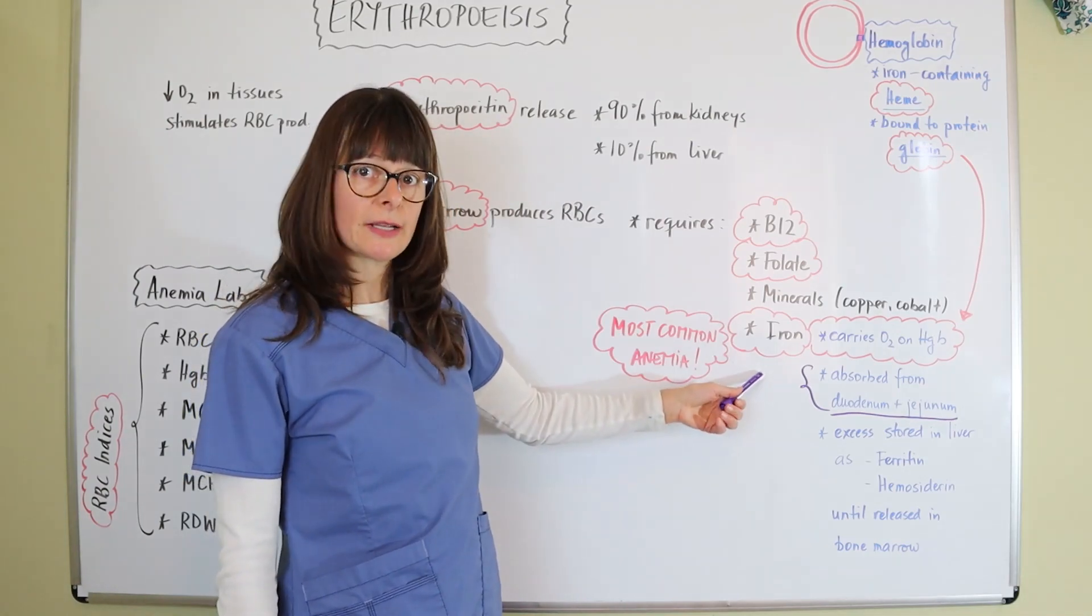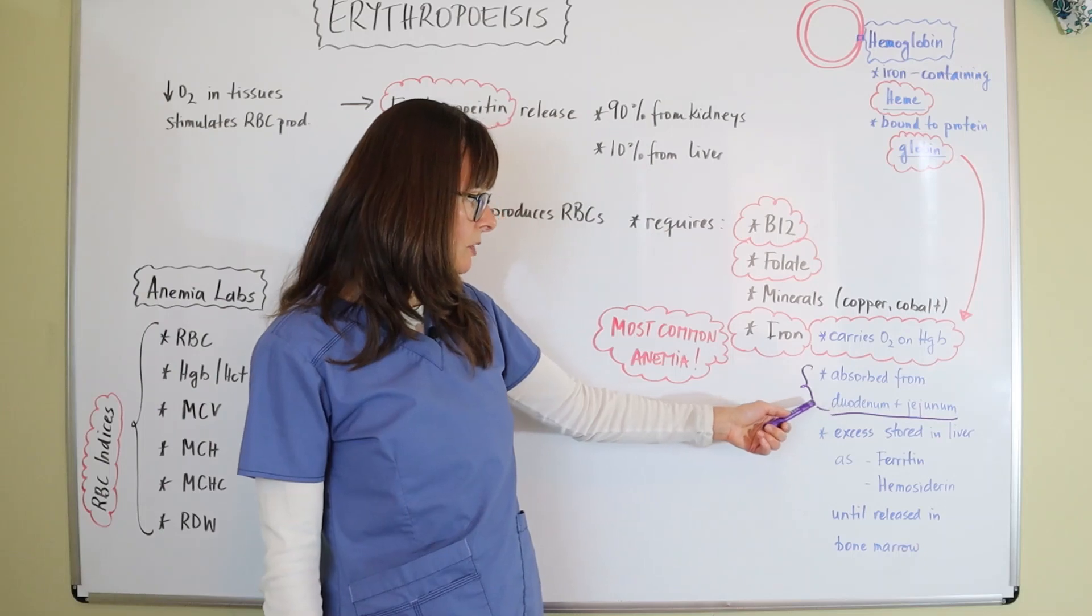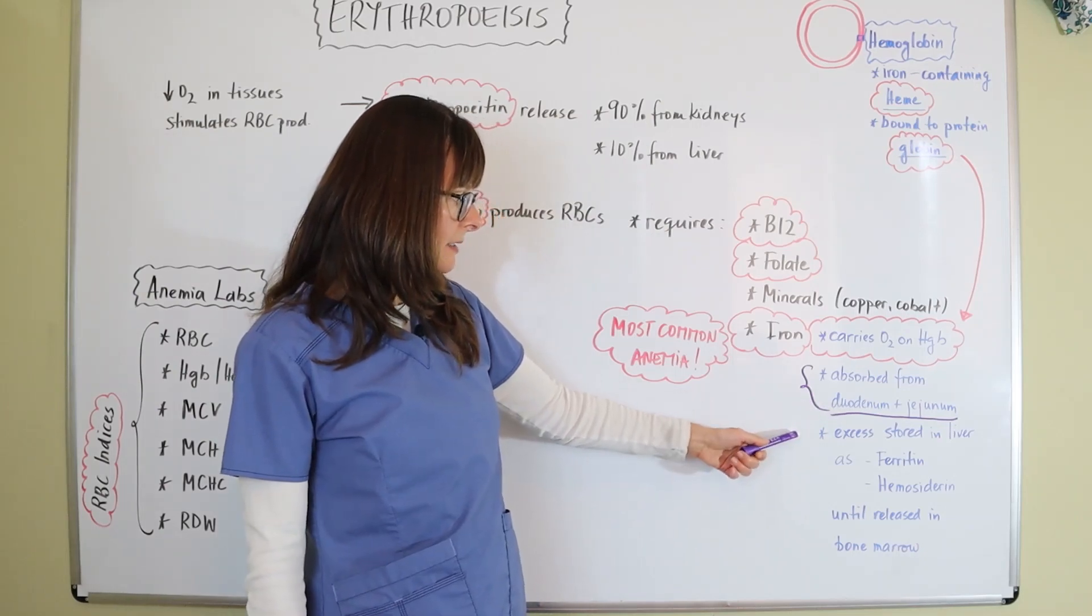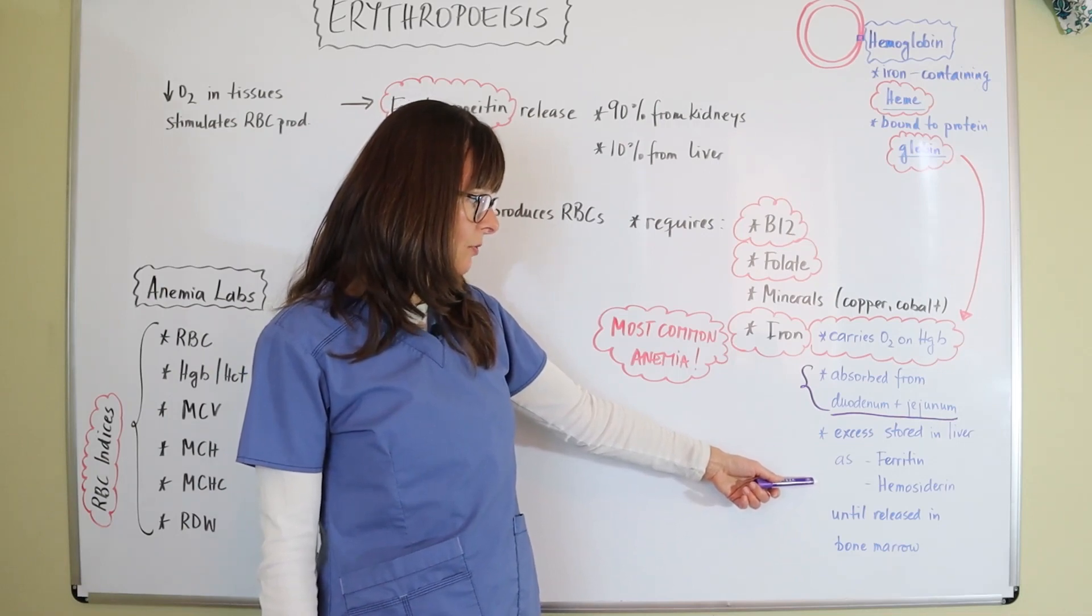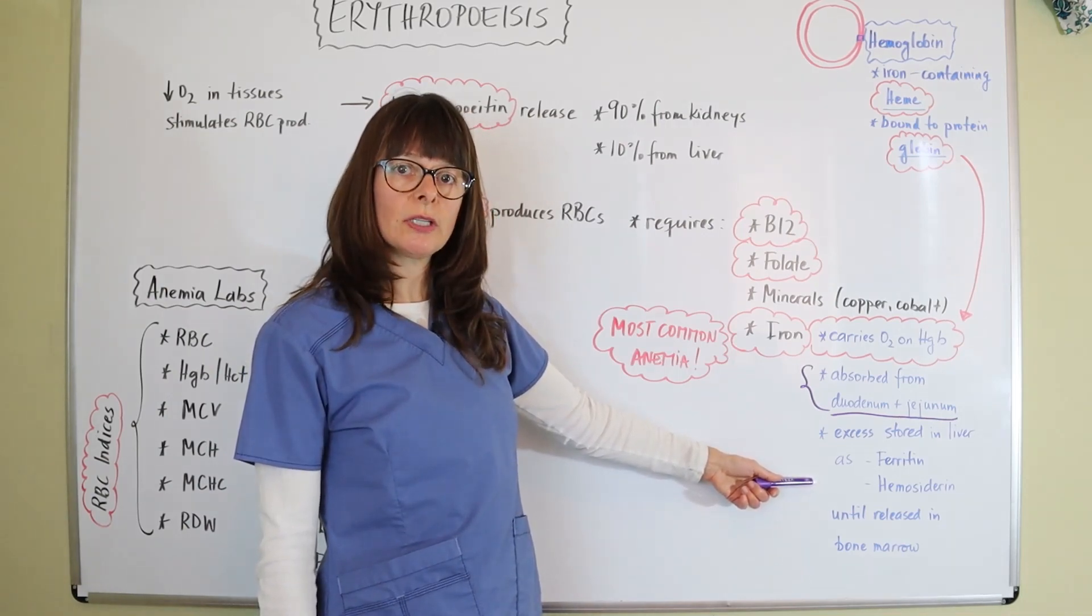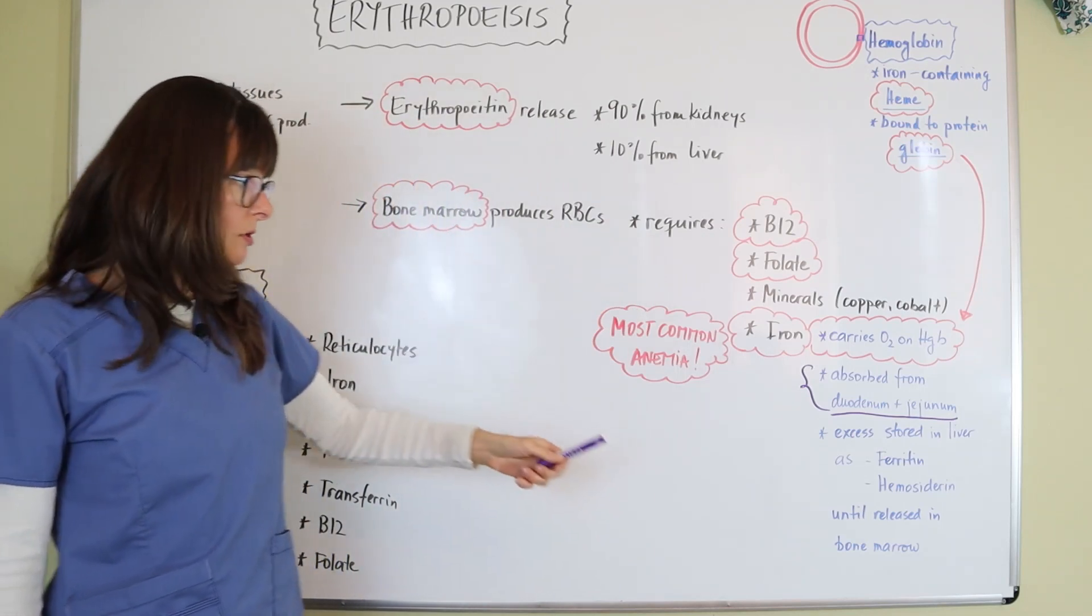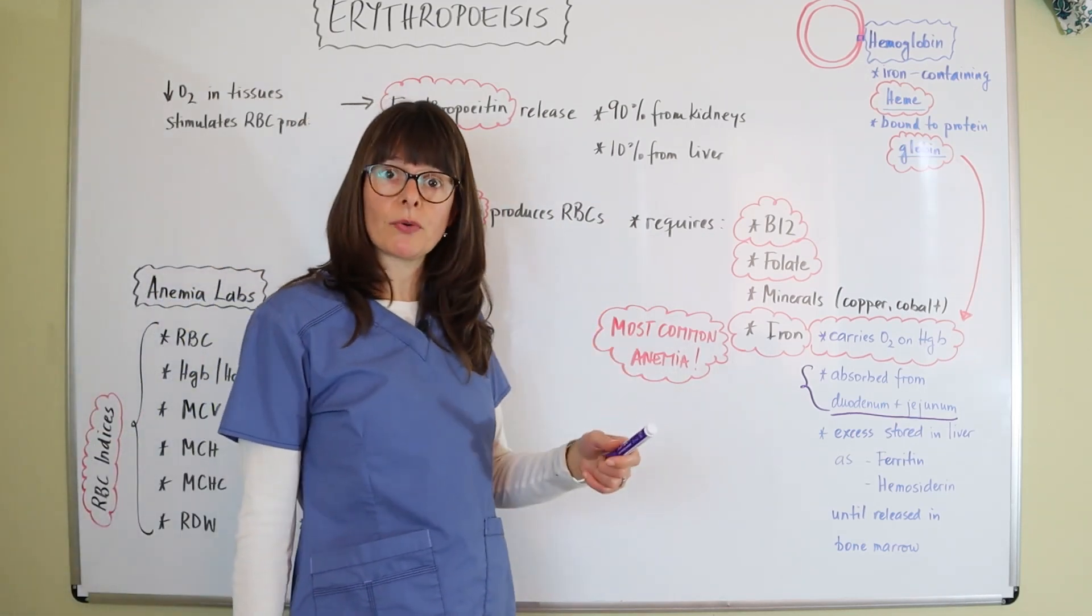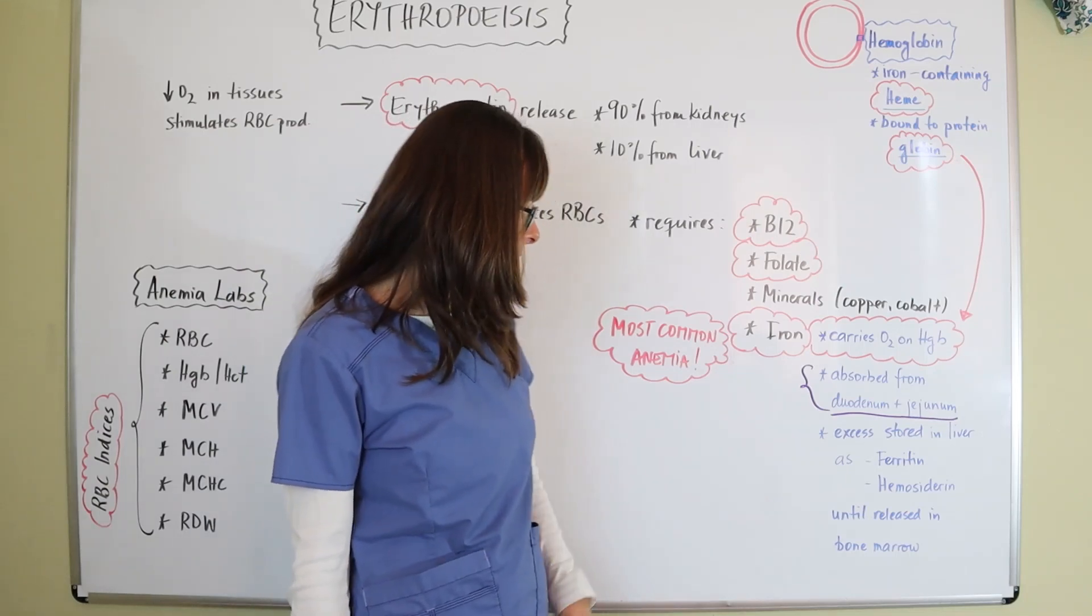The iron that we get from our diet gets absorbed by the duodenum and the jejunum of the small intestine. The excess gets stored in the liver as ferritin or hemosiderin, and it's just stored there until again, the oxygen in the tissue goes down and we need more red blood cells. Then it is released into the bone marrow.